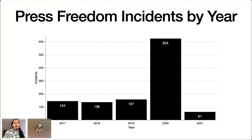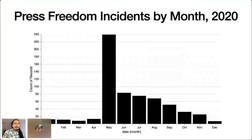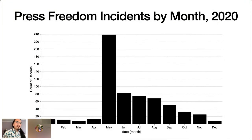Our staff worked around the clock to meticulously report and document every incident. Each of these is published on our website and you can browse the individual reports there. But we can also put these incidents into context by charting the aggregate data. Here you can see that 2020 was a much larger year for aggressions against press freedom than any of the previous three years.